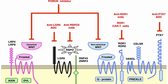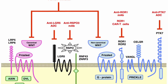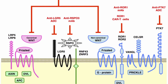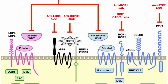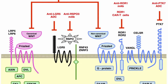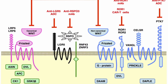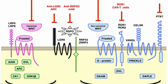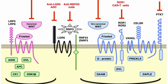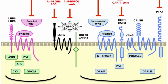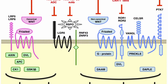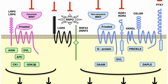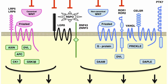The WNT pathway can be broadly categorized into the canonical and non-canonical pathways. In the canonical pathway, WNT binding to its receptors results in the stabilization and nuclear translocation of beta-catenin, a transcriptional co-activator. In the nucleus, beta-catenin interacts with transcription factors to activate target genes, including those involved in cell proliferation and differentiation. This pathway plays a key role in embryonic development and tissue regeneration. Non-canonical WNT pathways are more diverse and can involve intracellular calcium signaling, planar cell polarity, and other processes, including cell movement, cell shape changes, and tissue polarity.